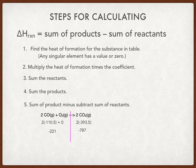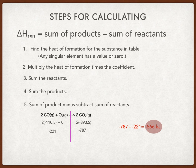Now take the product value, which is negative seven eighty-seven, and subtract the reactants value of negative two twenty-one. So it's negative seven eighty-seven minus negative two twenty-one, which gives you negative five sixty-six kilojoules. That's your answer.